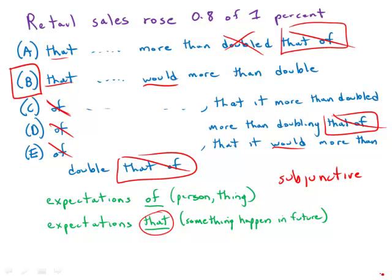B. Retail sales rose 1.8 of 1% in August, intensifying expectations that personal spending in the July-September quarter would more than double the 1.4% growth rate in personal spending for the previous quarter. So by far, B is the correct answer.